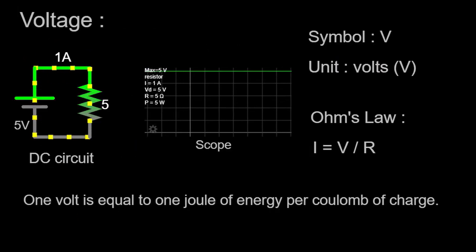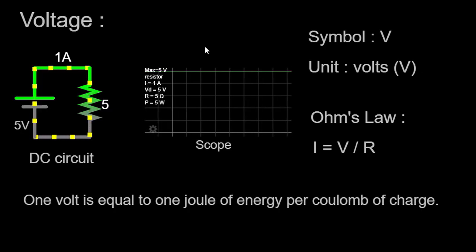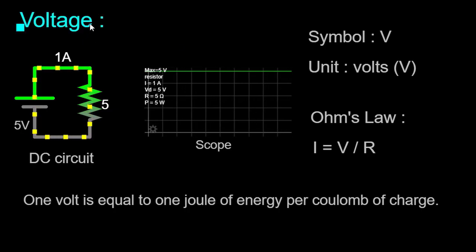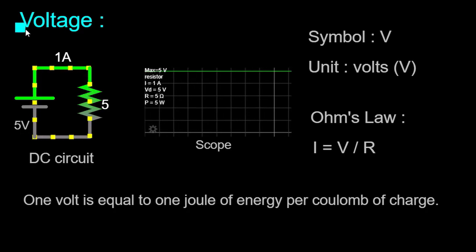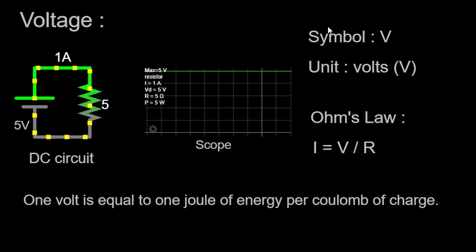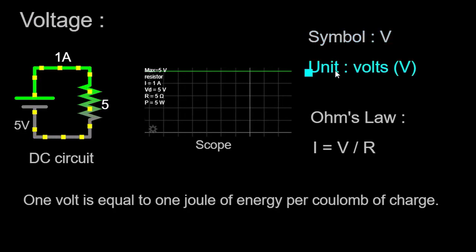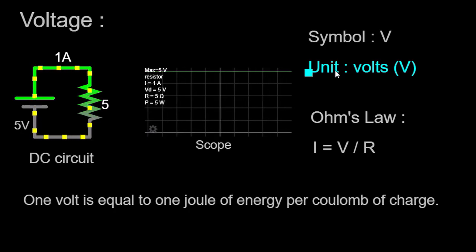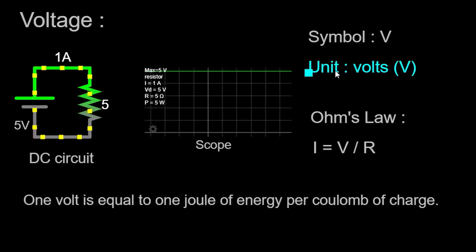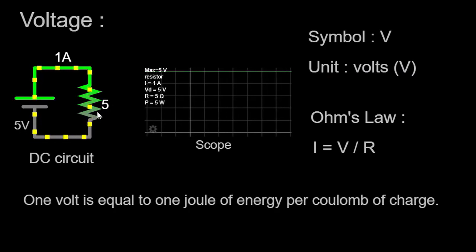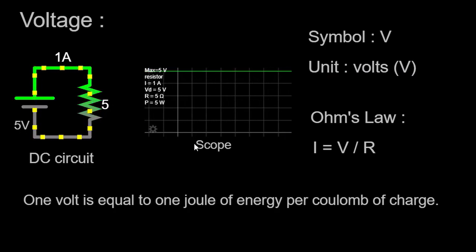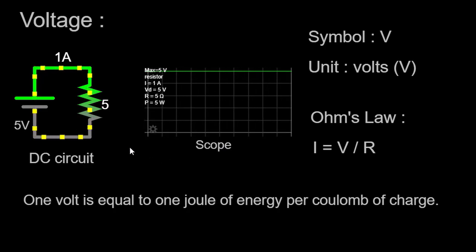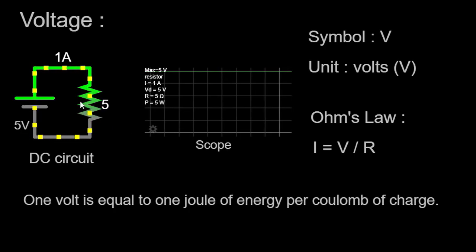Welcome to this comprehensive video on voltage, where we will delve into the fundamental concept of voltage, its significance in electrical circuits, and how it influences the behavior of components. Voltage, denoted by the symbol V and measured in volts (V), is an essential aspect of electricity that drives the movement of electric charges and the flow of current. In our demonstration setup, we have a 5-volt voltage source connected to a 5-ohm resistor and a scope.